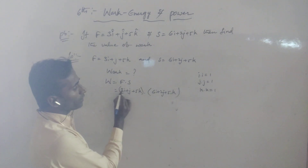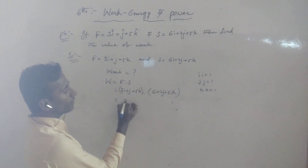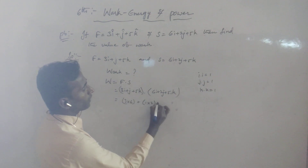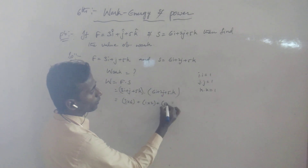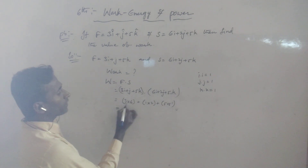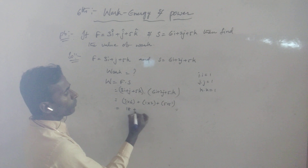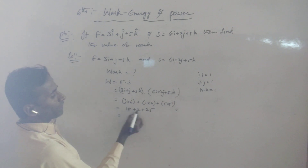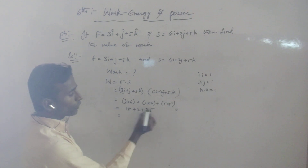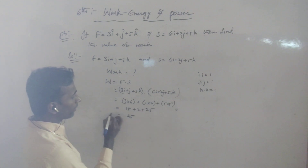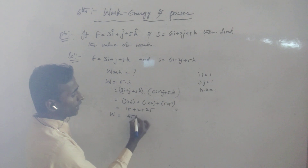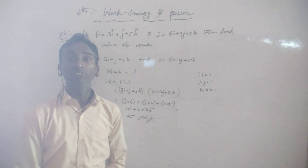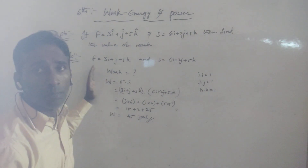So now we can write: 3 into 6 plus 1 into 2 plus 5 into 5. Simplifying: 18 plus 2 plus 25. So 18 plus 2 is 20, and 20 plus 25 gives a total value — W is equal to 45 joules. This is one type of problem, and 100% you will get this in the final exam.